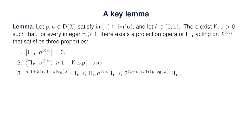This third inequality says, in essence, that you can take pi sub n to be the projection onto the space spanned by some subset of the eigenvectors of sigma tensor n for which the corresponding eigenvalues lie between 2 to the power of 1 plus delta times n times the trace of rho log sigma, and 2 to the power of 1 minus delta times n times the trace of rho log sigma. It is important to note that k and mu are positive real numbers that can depend on rho and sigma but are independent of n. In particular, the value on the right-hand side of the second item approaches 1 exponentially fast as n goes to infinity.